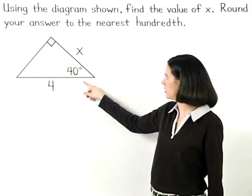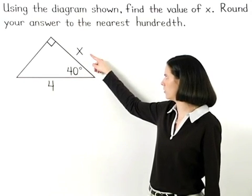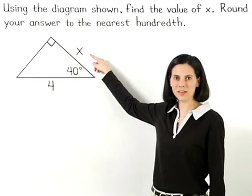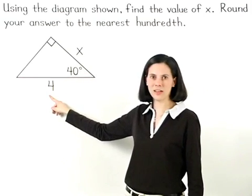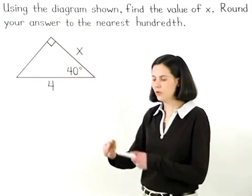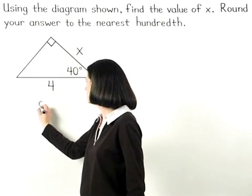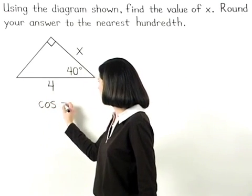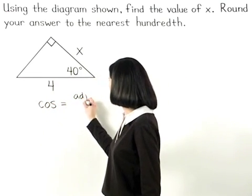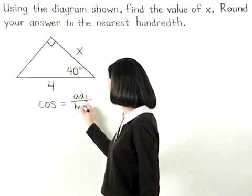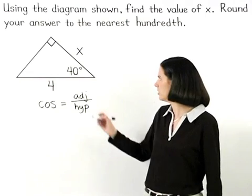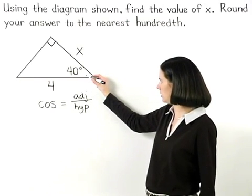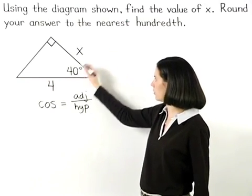So we're given that the side adjacent to the 40-degree angle has a length of x and the hypotenuse of the triangle has a length of 4. And remember that cosine equals adjacent over hypotenuse. So we can set up the equation cosine of 40 degrees equals x over 4.